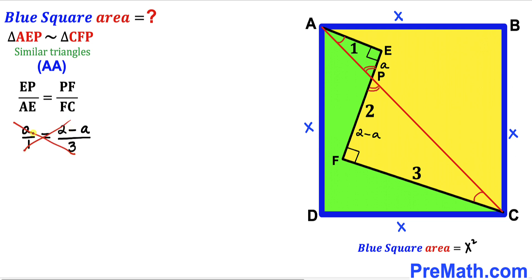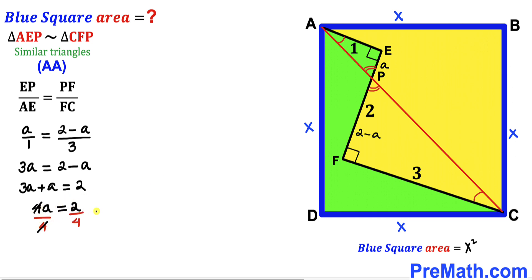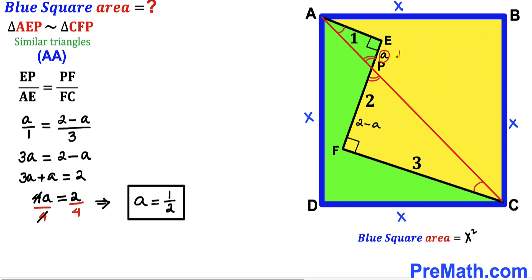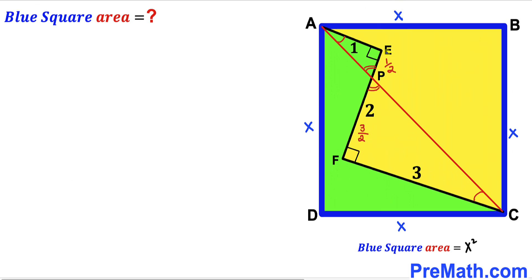Cross-multiplying gives us 3a equals 2 minus a. Moving the minus a to the other side gives 4a equals 2. Dividing both sides by 4, a equals 1/2. Substituting back, PF equals 2 minus 1/2, which gives PF equals 3/2. So EP equals 1/2 and PF equals 3/2.